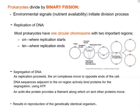Now we're going to discuss prokaryotes and how they divide by binary fission. Prokaryotes divide when the environment is favorable — for example, when there are enough nutrients available and the temperature is correct. Anytime the environment is favorable, the bacteria are going to initiate the division process. When the signal is received, replication of DNA happens.